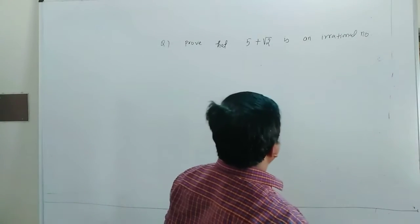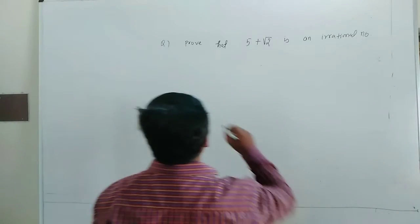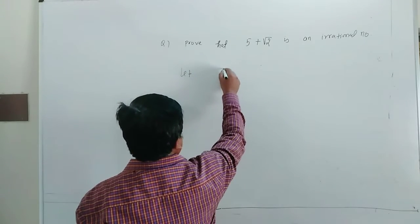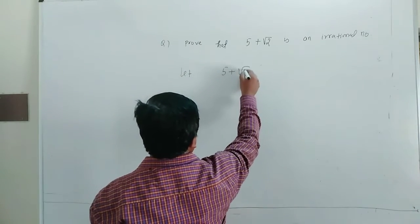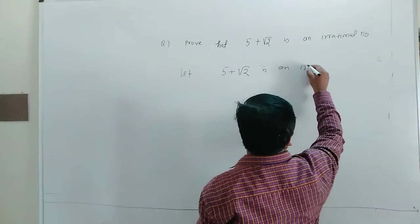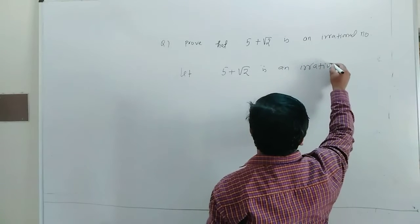Prove that 5 plus under root 2 is an irrational number. First, let us assume 5 plus under root 2 is a rational number.